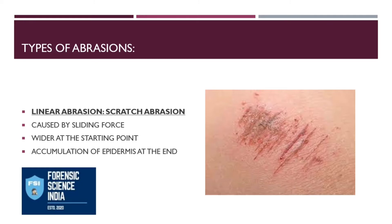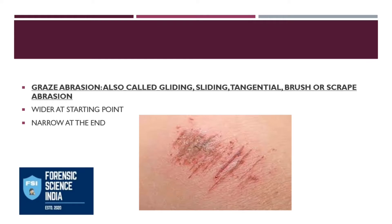The second type of abrasion is called graced abrasion, also known as gliding, sliding, tangential, brush, or scrape abrasion. It is called so because two bodies can form abrasion if they are tangential and glide past each other, or sometimes if they brush against any rough or corroded surface. If it is a very sharp or pointed object, the skin can also get scraped off. These are also wider at the starting point and narrower at the end point.